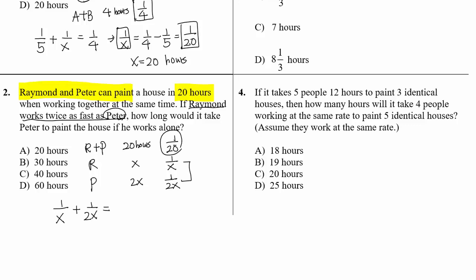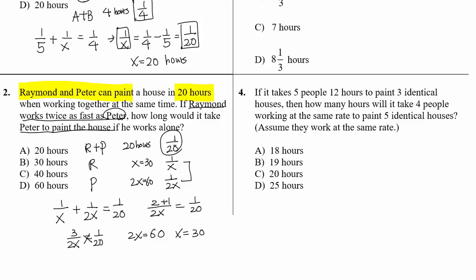One over X equals two over 2X, so two over 2X plus one over 2X equals three over 2X, which equals one over 20. Using cross multiplication: 2X equals 60, so X equals 30. Raymond takes 30 hours and Peter takes 60 hours. Find the rate and compare with the combined rate.